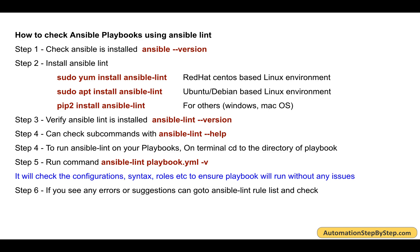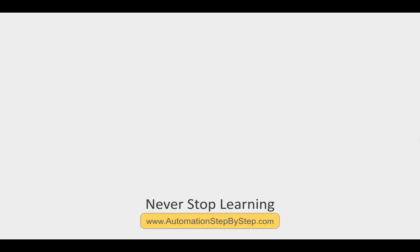So this is how we can check our playbook files. We've seen how Ansible Lint checks configurations, syntax, roles, and more. We can use the rule list to understand errors and suggestions, and visit the Ansible Lint documentation for detailed rule descriptions. I hope this was useful — if you have any questions, let me know in the comments. Thank you for watching and never stop learning.